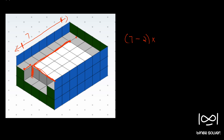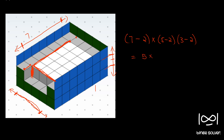And the height is obtained by removing one from both sides of the height-3 dimension, giving 3 − 2 = 1. So the number of unpainted cubes is 5 × 3 × 1 = 15. If you count them: one, two, three, four, five, six, seven, eight, nine, ten, eleven, twelve, thirteen, fourteen, fifteen — we have exactly 15 cubes with no sides painted.